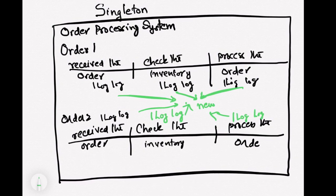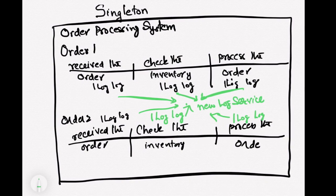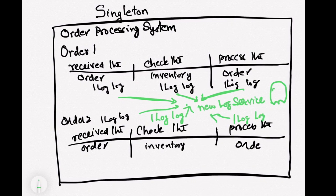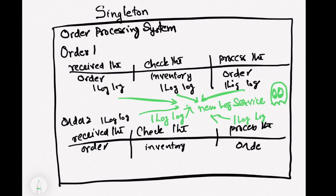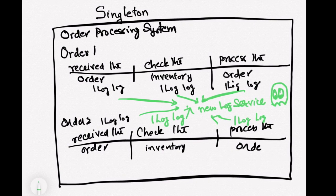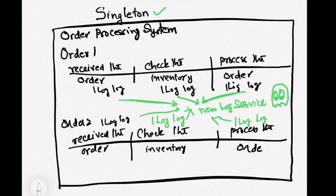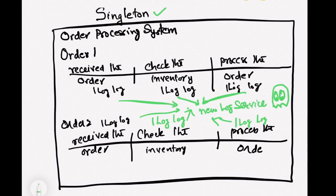All the log service requests go to single instance of the service or single instance of the object. So in this case, we will have only one instance of the service which is processing all the objects. So if you need a singleton pattern, this is a very good way to do it.